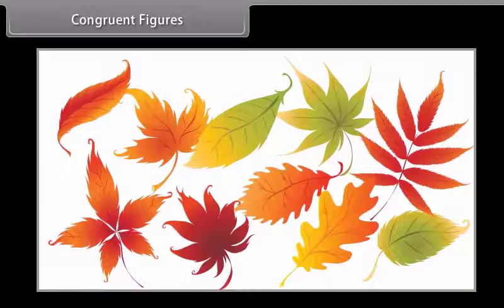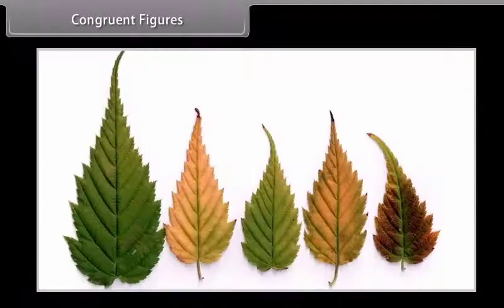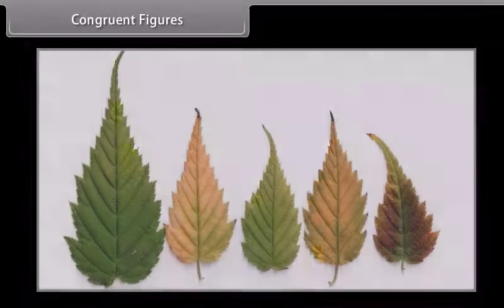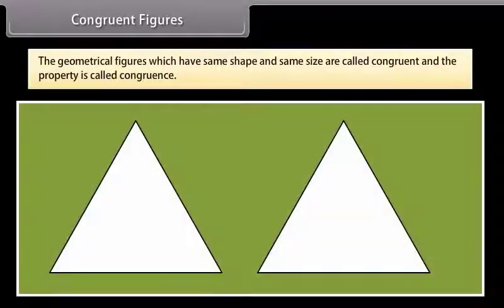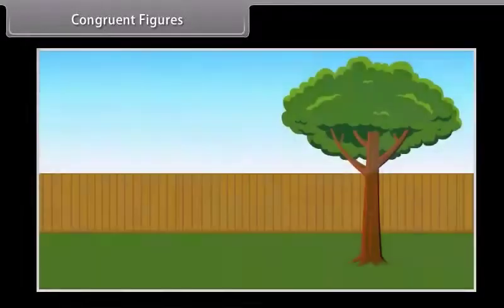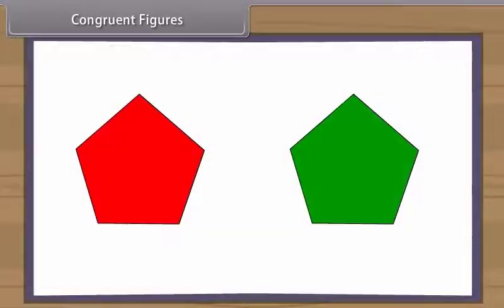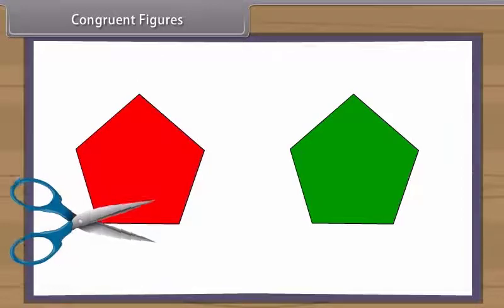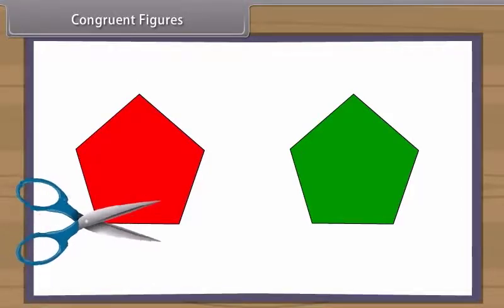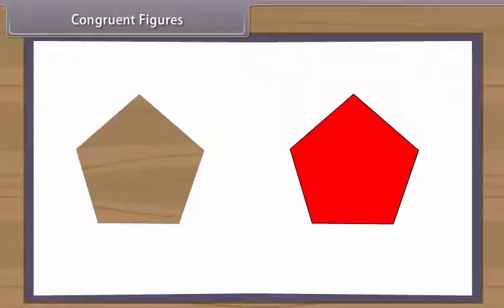You might have observed that leaves of different trees have different shapes, but leaves of the same tree have almost the same shape, although they may differ in size. The geometrical figures which have the same shape and same size are called congruent, and the property is called congruence. Congruent objects are duplicates of one another. If two mathematical figures are congruent and you cut one figure out with a pair of scissors, it will fit perfectly on top of the other figure.